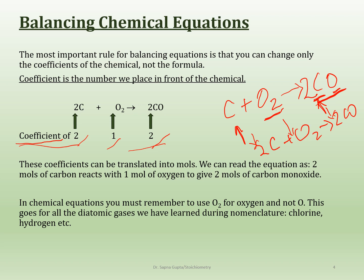Think about compounds and mole ratios. When dealing with carbon monoxide, think of it as 1 mole carbon and 1 mole oxygen. Now relate this to the equation: 2 moles of carbon reacting with 1 mole of oxygen gives 2 moles of carbon monoxide. If you read the equation that way, life will be easier in chemistry. Balancing an equation is important — if you don't balance it, you're not following the law of conservation of mass. Make sure the equation is balanced and think in terms of moles.